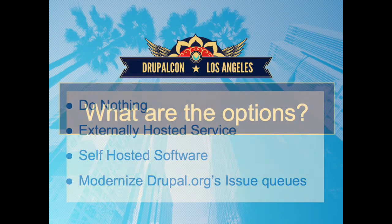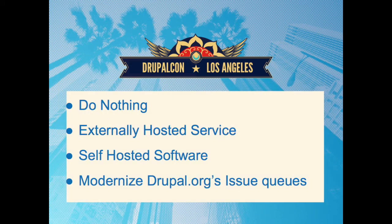So what are the options? This isn't a new conversation - it's been talked about a lot in the issue queues, so this is summarizing and digesting that information. We have four potential options: do nothing (status quo is fine), move to an externally hosted service like Bitbucket, GitHub, or GitLab's hosted service, switch to a self-hosted service like Fabricator or Jarrett or GitLab on our own infrastructure, or modernize our own issue queues - fix them in ways that satisfy our needs while reducing impact.